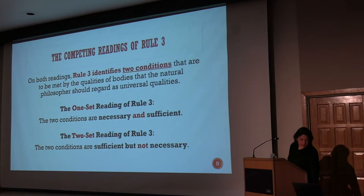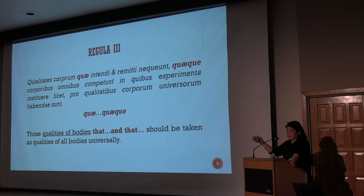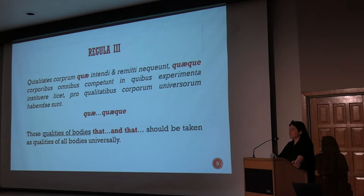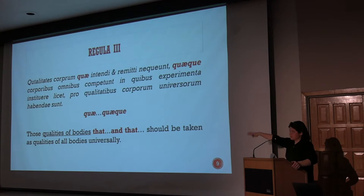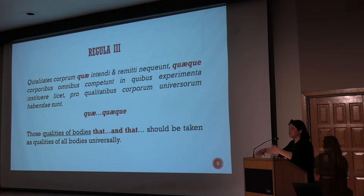One note before you think I'm going off the rails: the Latin construct of the sentence does allow for my reading — it allows sufficient but not necessary conditions. The construction is quae quae quae, so in English: 'that, that, that.' The reason it's possible in this case is because the subject of the sentence, 'qualities of bodies,' is plural. When it's singular, and Newton uses this construction several times — about five or six times in the Principia — if the subject term is singular, then it is necessary and sufficient. But when it's a plural, like 'qualities of bodies,' it can be one or the other — necessary and sufficient, or sufficient but not necessary.